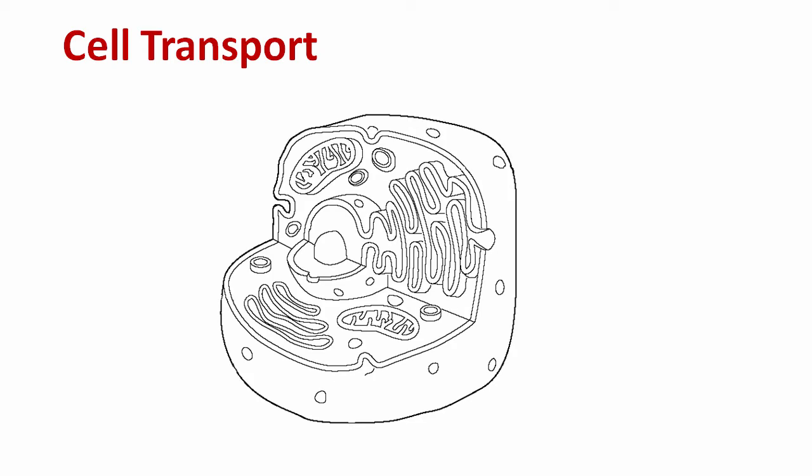Up until now, we've considered cells to be rather complex systems of specialized cell parts called organelles, and all these combine together to provide function much like a factory. In the same way that a factory imports raw materials and then exports products and wastes, a cell too must transport materials across the membrane. So in this unit, you'll explore how membranes manage cell transport while still maintaining homeostasis.